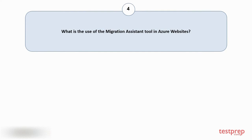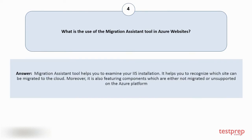Question number four: what is the use of the migration assistant tool in Azure websites? Your answer is: the migration assistant tool helps you to examine your IIS installation. It helps you to recognize which sites can be migrated to the cloud. Moreover, it also identifies components which are either not migrated or unsupported on the Azure platform.